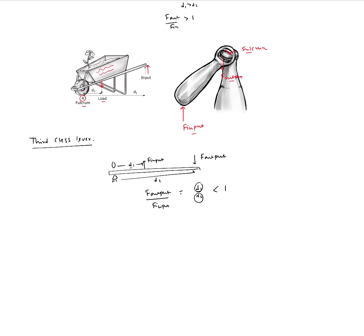You actually have to apply a larger input force to get a lower output force. What you gain in a third class lever is range of motion: the point of application of the output force travels a larger distance compared to the input force, so you gain on the range of motion. There are several examples of third class levers found in nature.